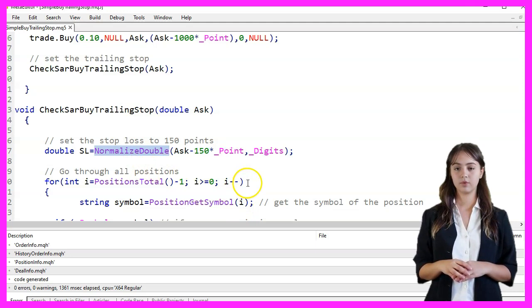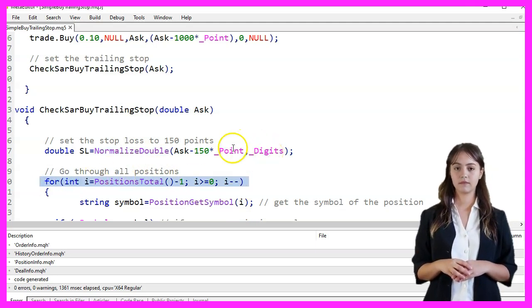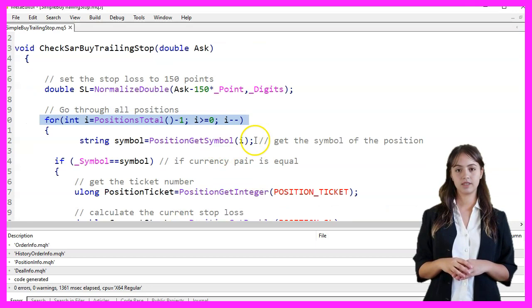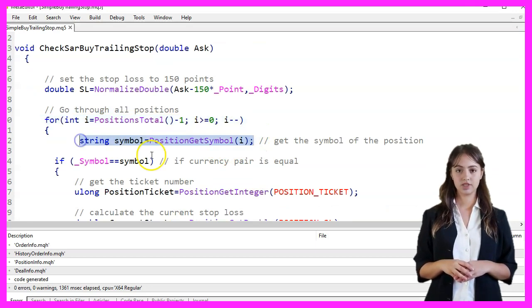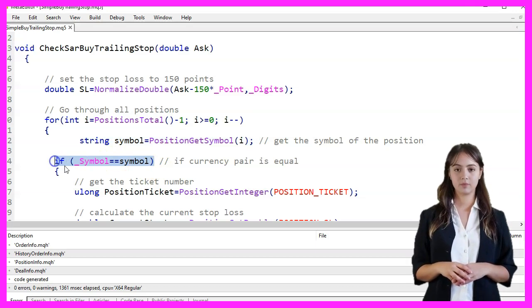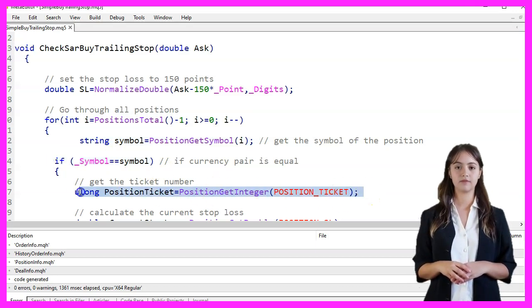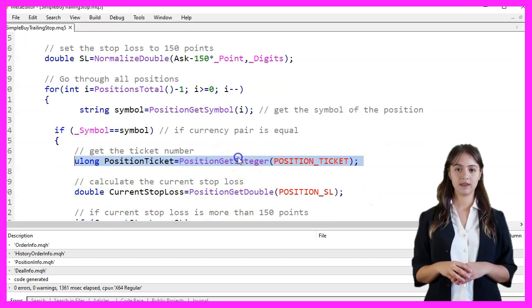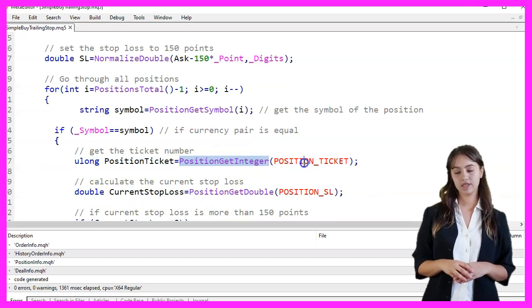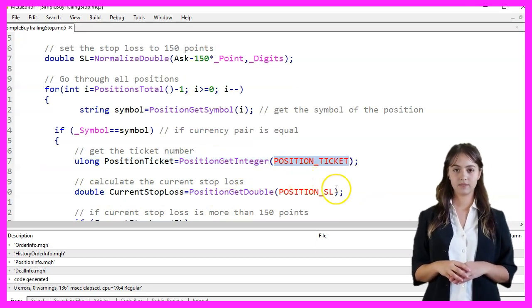We then loop through all open positions using a for loop. For each position, we get the symbol of the position using PositionsGetSymbol. If the symbol matches the current symbol, we proceed to get the ticket number of the position using PositionsGetInteger with the PositionsTicket parameter.